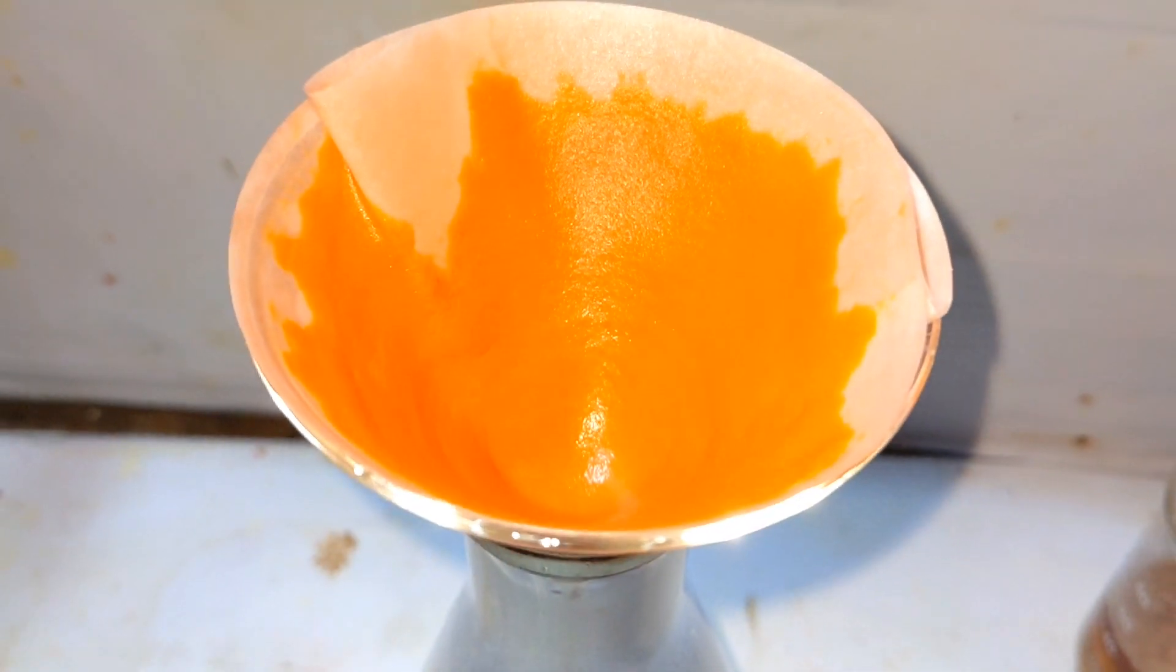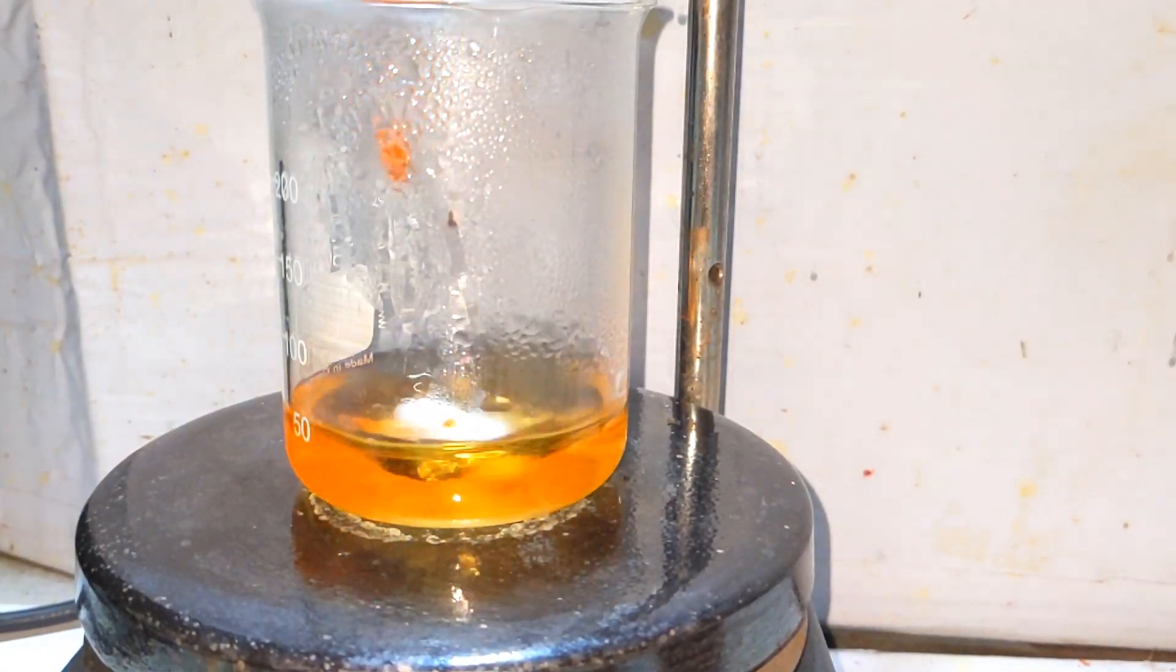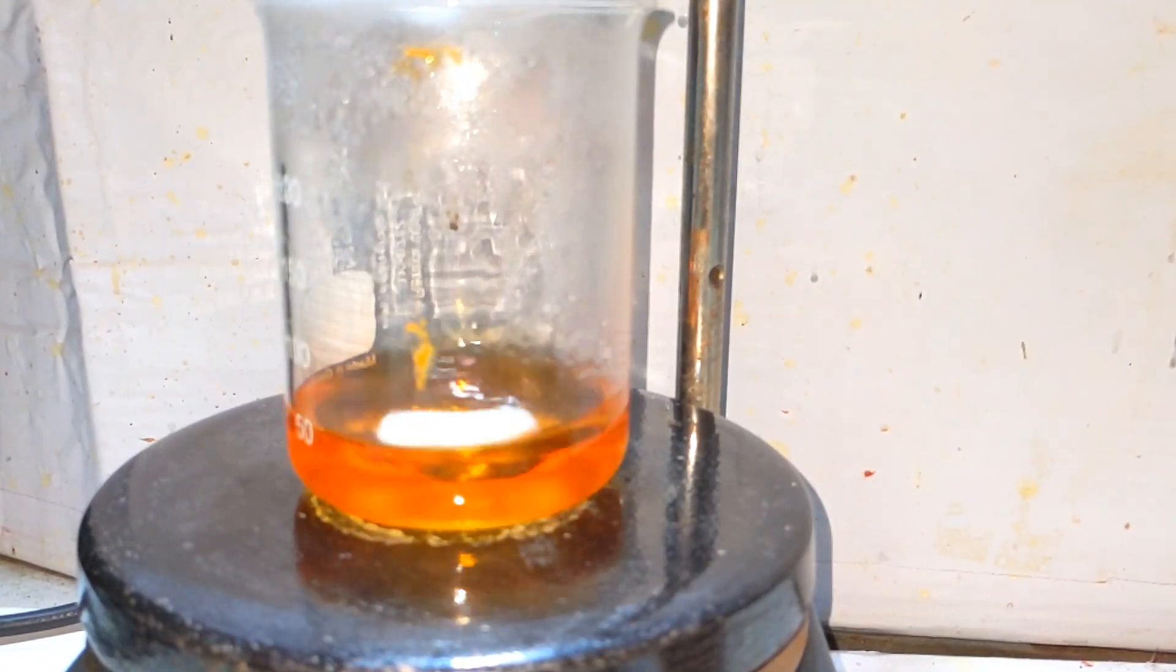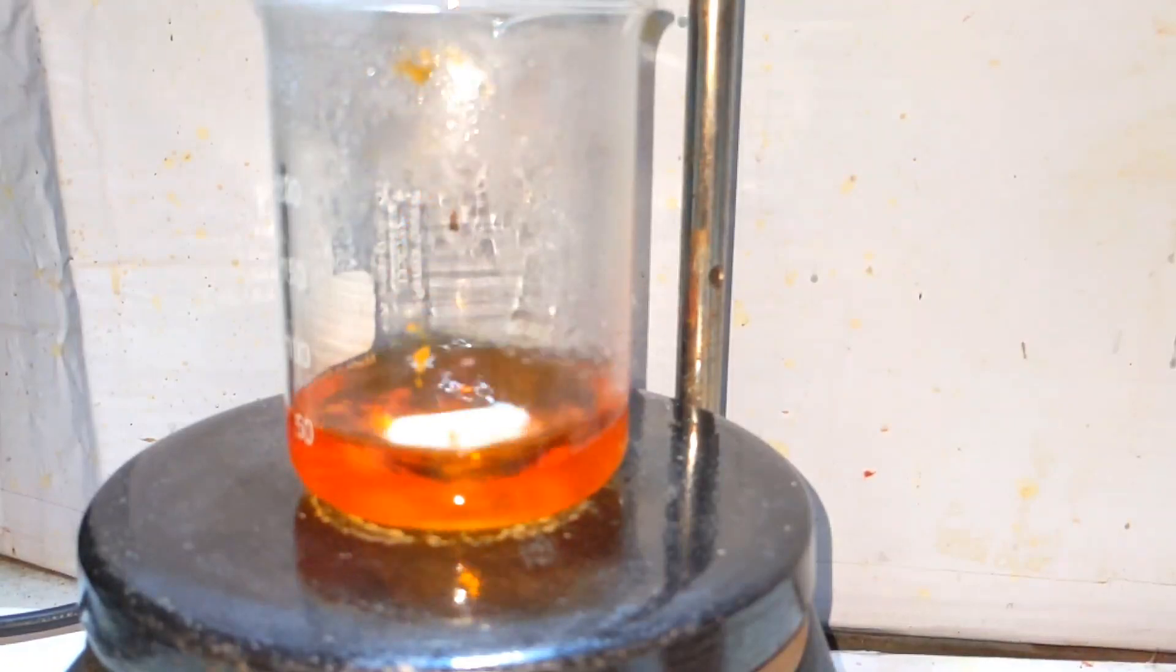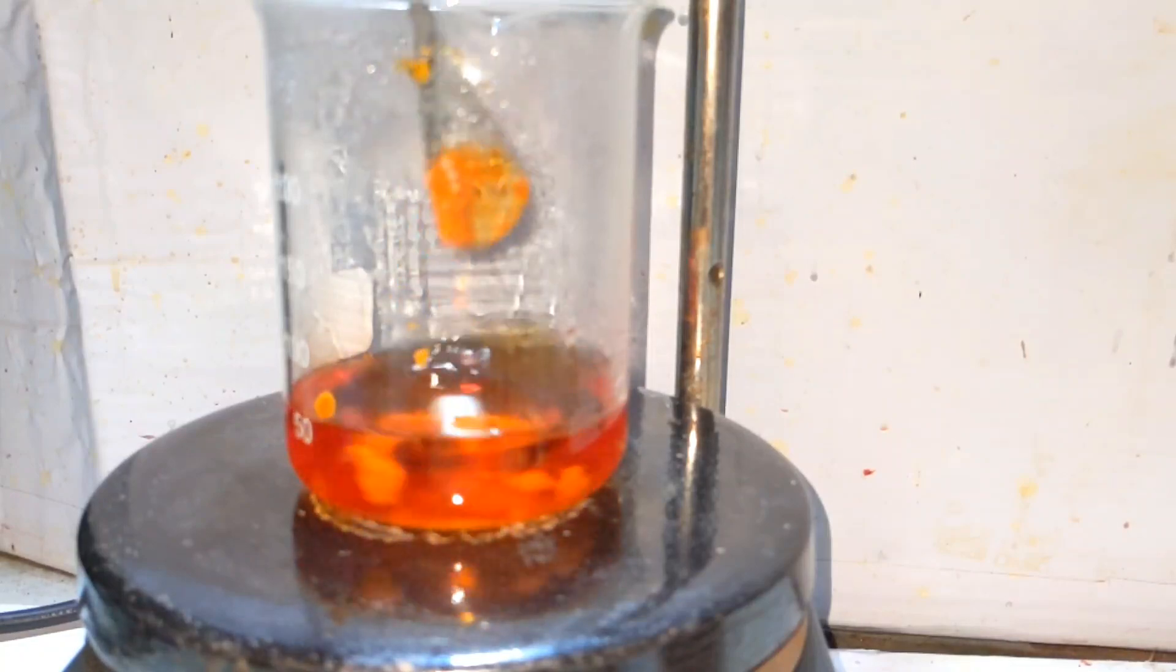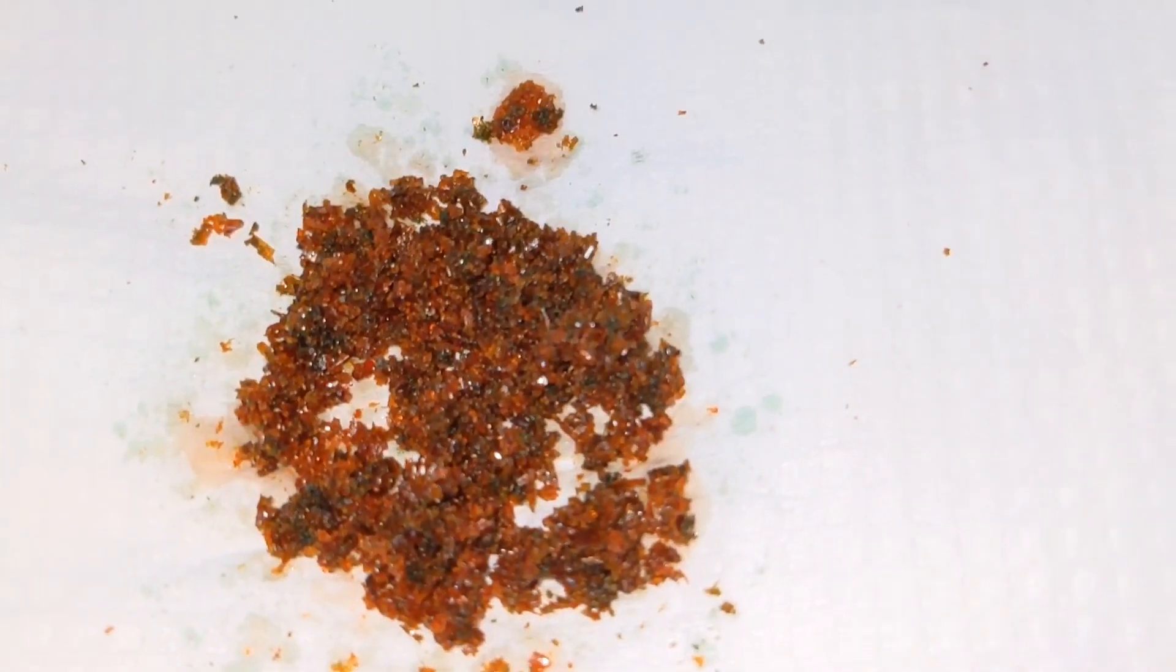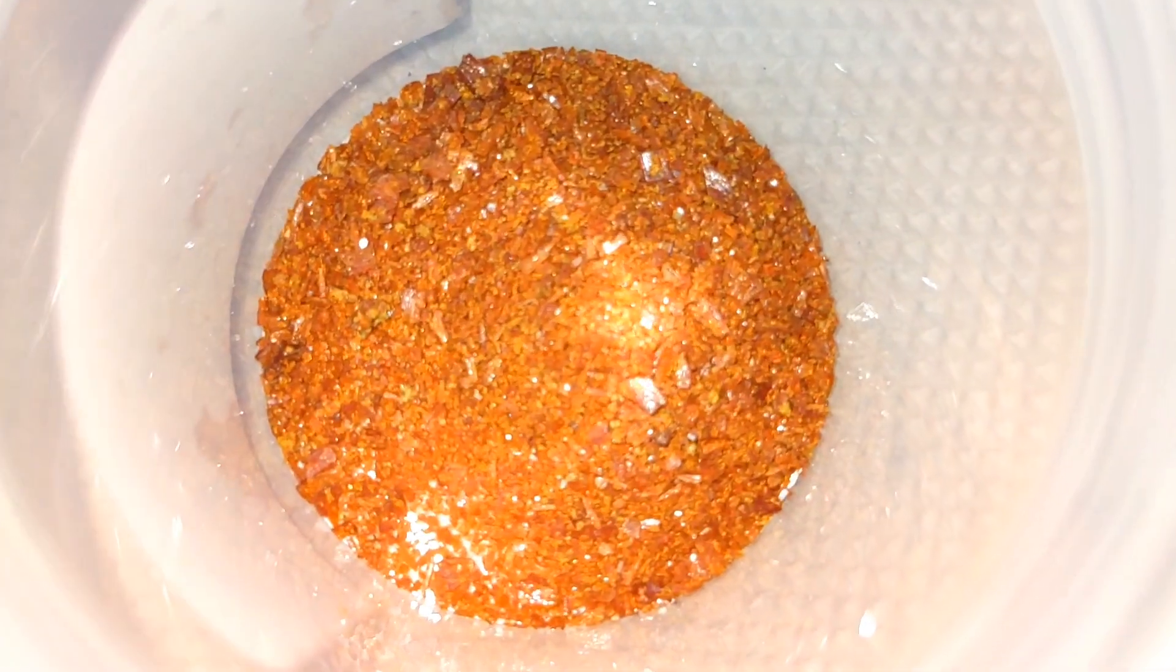And here we have the crude product. Now to recrystallize the compound, the recrystallization of this compound is very easy and can be done using hot boiling water. This compound is soluble in hot water, so almost all the compound was added to the hot boiling water. I am taking around 50 milliliters of water here. On cooling, the crystals separate out which I then dried using tissue paper and this is the final product.